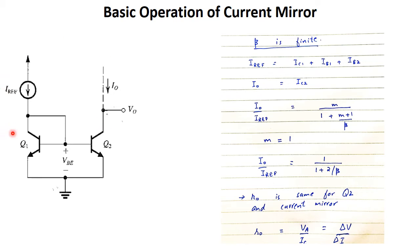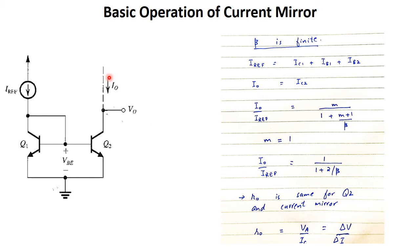The basic current mirror design has two problems. First, the output resistance is not very large — it is small. Second, I-out depends upon β. Since β is unstable and can change with temperature, I-out will also be changing and not stable. So this is not a good current mirror because the main job of a current mirror is to provide a constant output current.